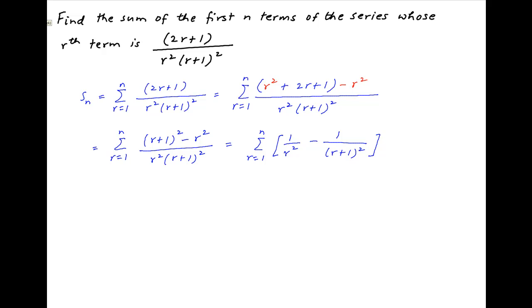Putting r = 1, we get the first term: 1 minus 1/2². Putting r = 2, we get the second term: 1/2² minus 1/3².